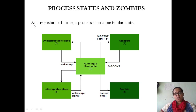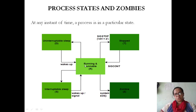At any instant of time, a process is in a particular state — zombie, running, interruptible, or uninterruptible. Once a process is created, it will be in a runnable state. Running and runnable are both denoted as 'R' in Unix, though they are two different states.